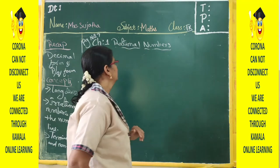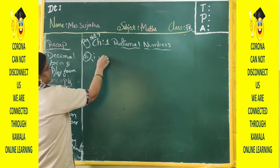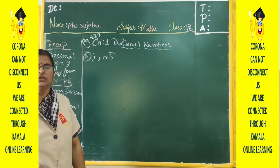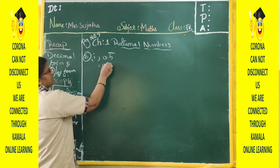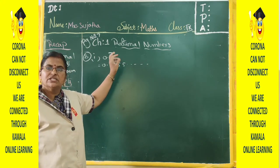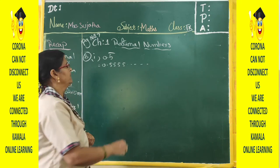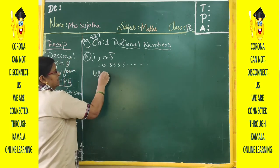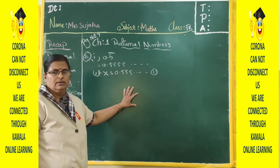The 8th sum is 0.5 bar. You have to change this into a p/q form. First, 0.5 bar is nothing but 0.5555 and so on — the 5 is repeating. So let x equal to 0.5555 and so on. Call it equation 1.